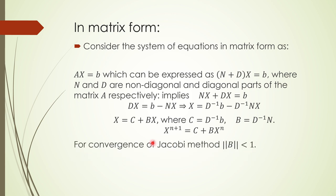The question now is about convergence. The Jacobi method is convergent if the norm of the iteration matrix B is less than 1. However, we usually do not check that directly — there is an equivalent and simpler rule.